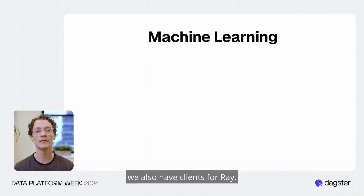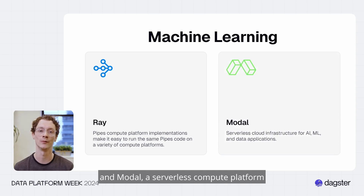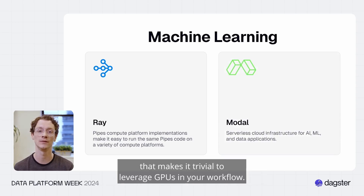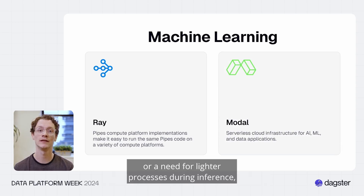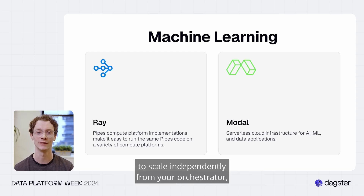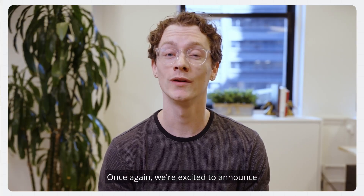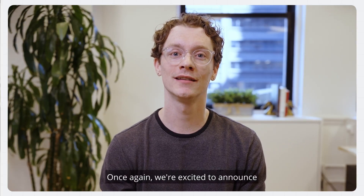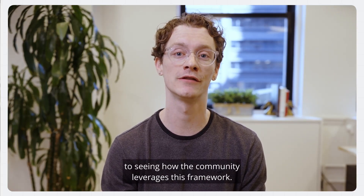On the machine learning side, we also have clients for Ray — a framework for scaling ML workloads — and Modal, a serverless compute platform that makes it trivial to leverage GPUs in your workflow. Whether you have high demand for GPUs while training models or need lighter processes during inference, Pipes makes it possible for your compute to scale independently from your orchestrator, so infrastructure is in tune with your needs and cost is optimized. We're excited to announce that Pipes is generally available, and we look forward to seeing how the community leverages this framework.